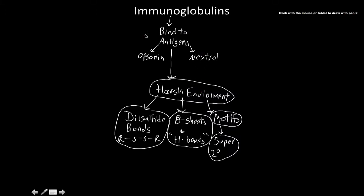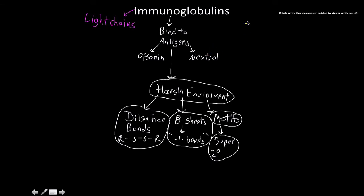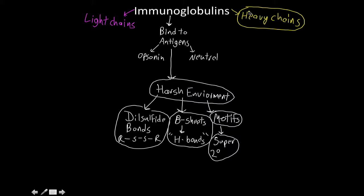The two parts of the immunoglobulins are the light chains and the heavy chains. For each and every one of these, there is the variable region, there's the constant region, and then there's the specific isotype that those determine.